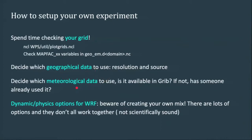You also need to decide which geographical data to use — WRF provides some at different resolutions and from different sources. Then there's the question of meteorological data, which probably comes with setting up your experiment scientifically. If you can have the data in GRIB format, that's better. If you can't, try to find someone who has already used it with WRF and has already created intermediate files. Some people for CORDEX have created intermediate files from CMIP5 outputs in NetCDF — that can be a useful source of information.